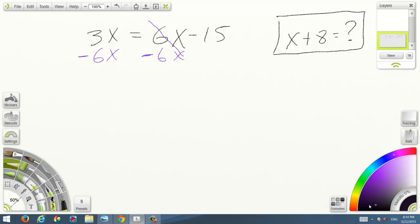And you have 3x minus 6x. That's basically 3 minus 6. And basically, if I give you 3 dollars and take from you 6, you lose 3. So that's why it's negative 3. Negative 3x equals negative 15.